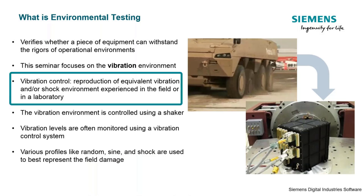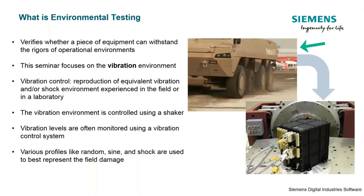Today we're only going to be focusing on vibration control testing. Vibration testing allows engineers to validate the reliability of their products through controlled testing. These vibration tests are going to accelerate the durability validation process by producing an equivalent lifetime of vibration contributions but in less time. In this picture, on the left we have a field vibration where we're gathering data on a profile, and then we're going to reproduce that vibration on a shaker table.